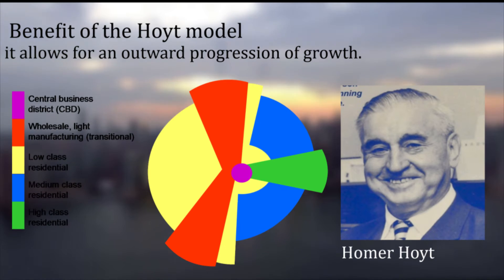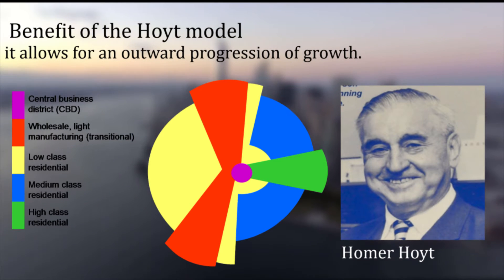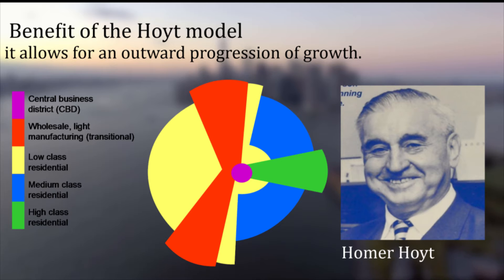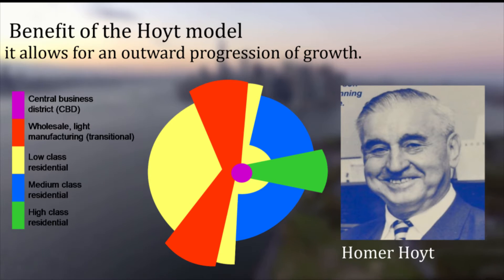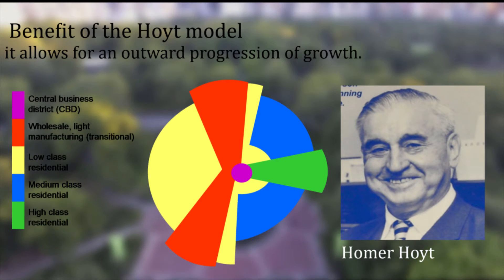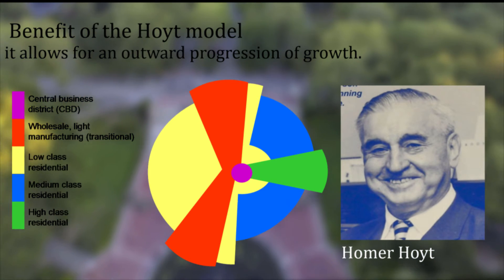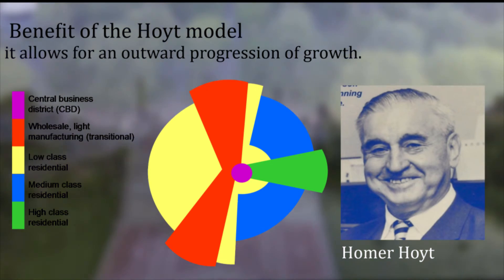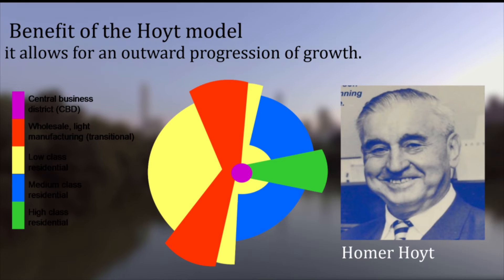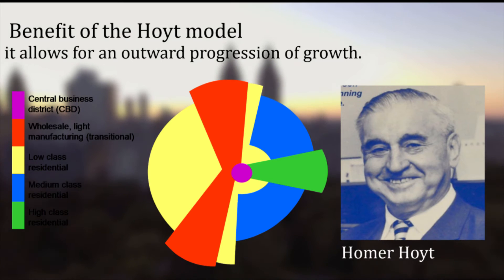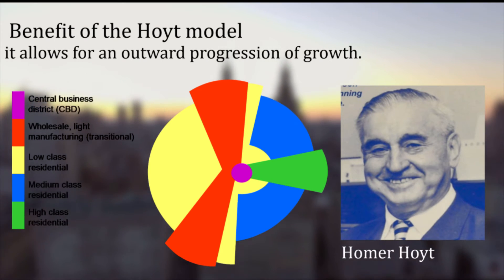The Hoyt sector model emphasized the importance of transport routes and the incompatibility of various land uses. After World War II, mixed-race neighborhoods were considered unstable, and the corresponding attitude toward lending came to be known as redlining, because of the color used on maps to designate high-risk neighborhoods. Out of this work emerged sector theory that replaced Burgess's concentric zone theory. The sector model uses ecological factors plus economic rent concepts to explain land use patterns, stressing the role of transport routes in affecting the spatial arrangement of the city. Both the distance and direction of roads from the city center are considered.